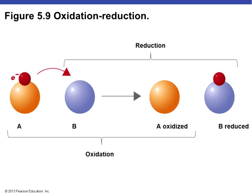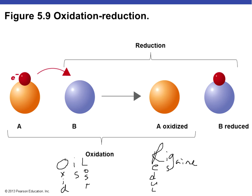Now we'll talk about oxidation and reduction, which is just as important to metabolism as enzymatic activity. Oxidation and reduction reactions are always coupled together: one requires the loss of electrons and in organic molecules usually hydrogens as well, and the other requires the addition of hydrogens and electrons. A good mnemonic is OIL RIG — Oxidation Is Loss of electrons and hydrogens, and Reduction Is Gain of electrons and hydrogens.